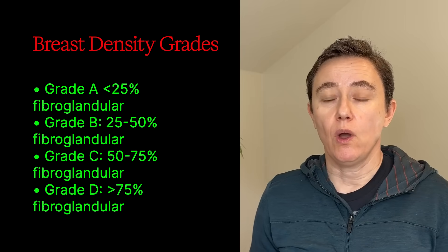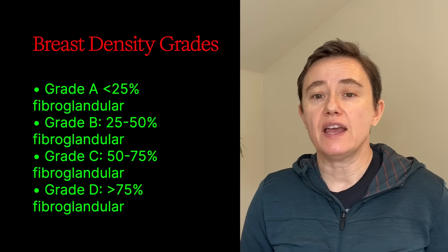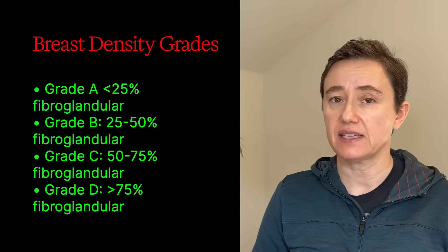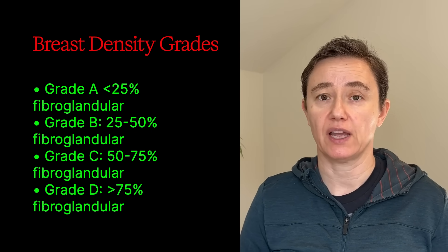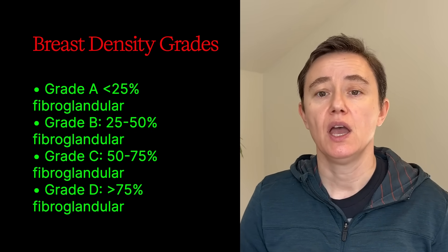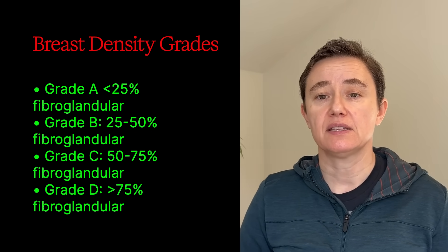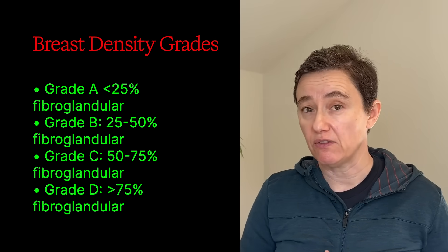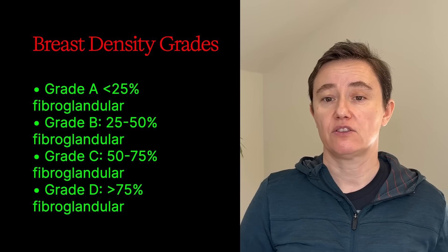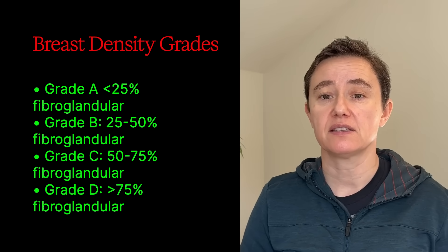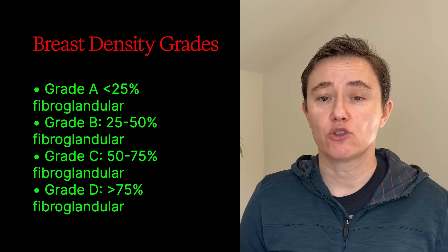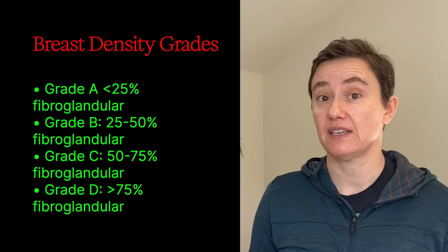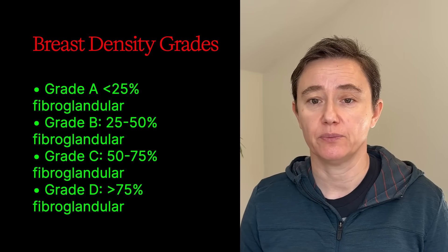To recap the grades: grade A is almost entirely fatty with less than 25% fibroglandular tissue. Grade B, scattered fibroglandular density, is 25 to 50%. Then heterogeneous dense, that's C or grade 3. And extremely dense is more than 75% fibroglandular tissue.